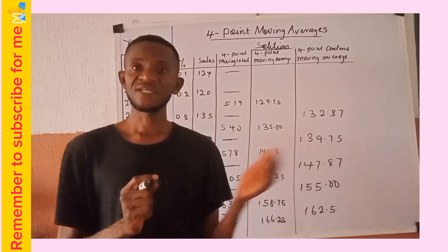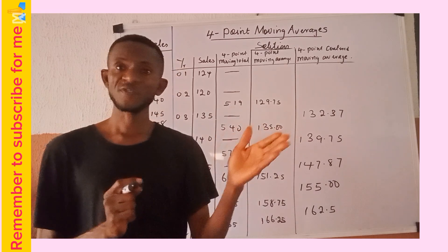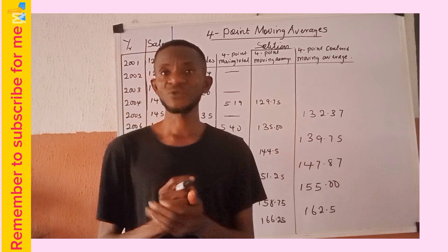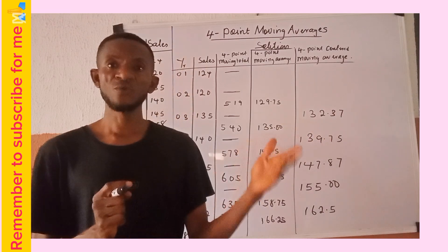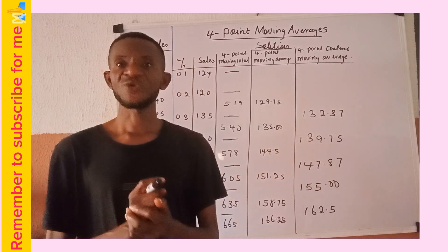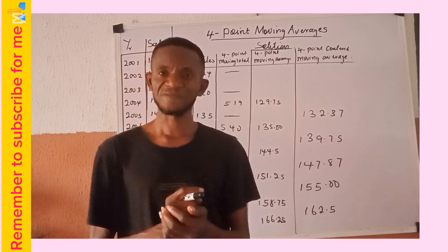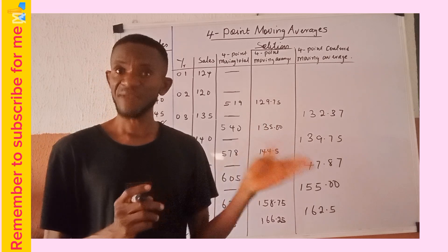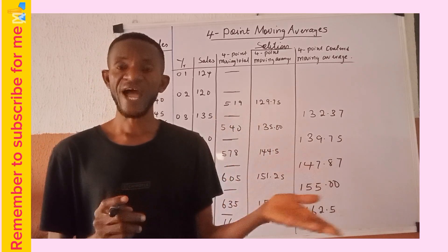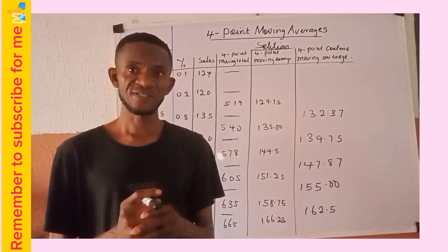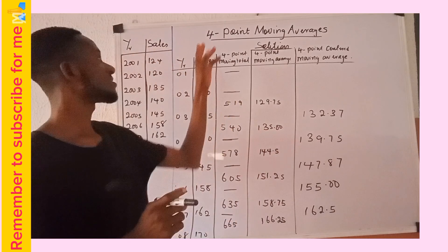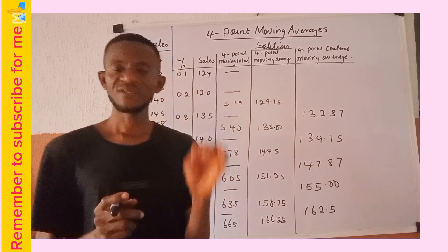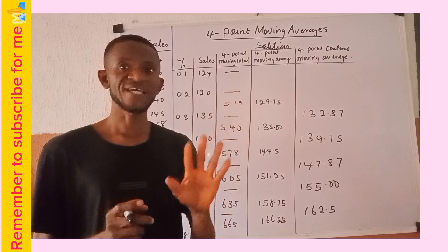The methods for measuring trend are: one, the freehand or graphic method; two, the semi-average method; three, the moving average method; and four, the least square method. We had already looked at the freehand method in a previous video, and semi-averages as well. We also started looking at moving averages, and today we are looking at four-point moving averages as a way of measuring the trend in time series data.